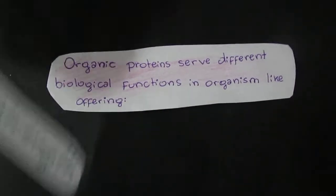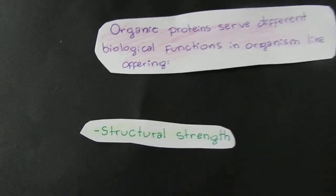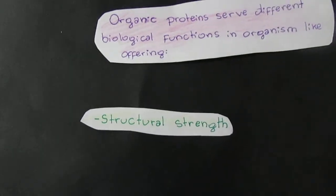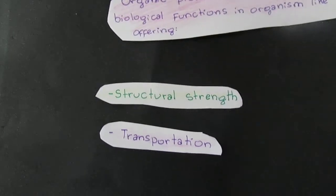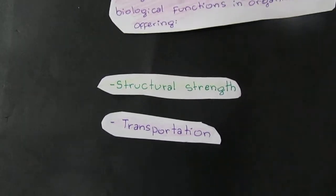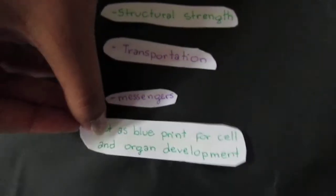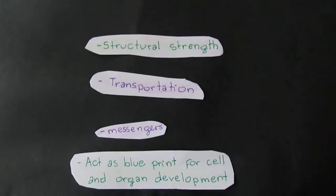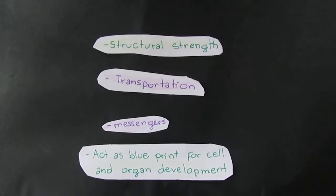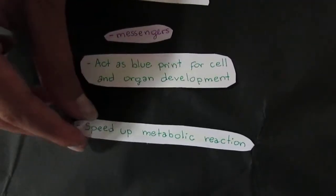Organic proteins serve different biological functions in organisms, like offering structural strength. For example, crabs have shells, that's their structural strength. They also have transportation, for example our blood is transported because of this. Messengers act as blueprints for cell and organ development, that's DNA which we're going to talk about later, and they speed up metabolic reactions.